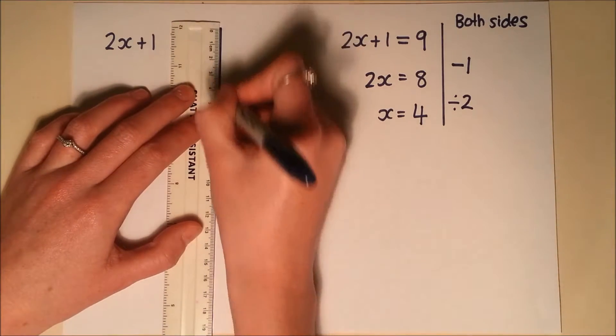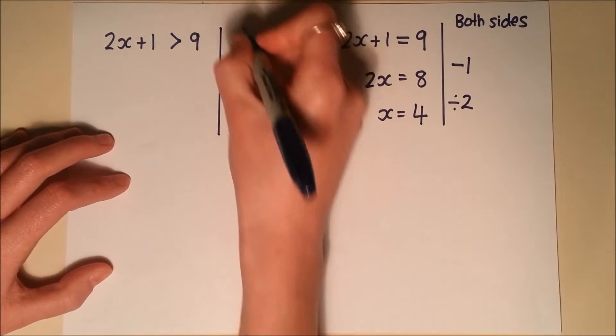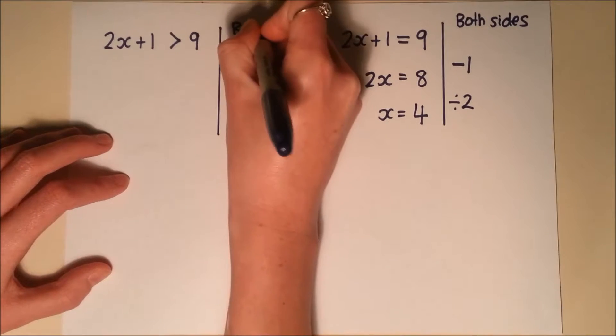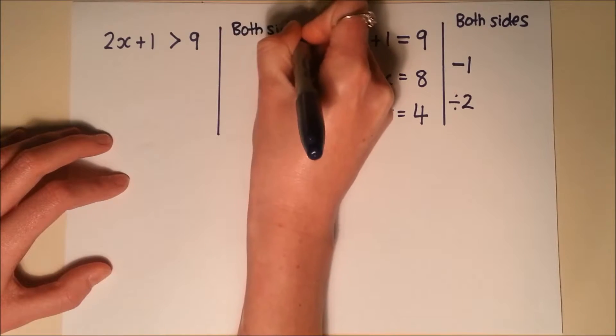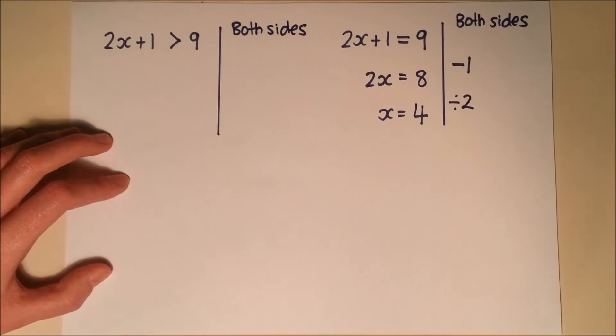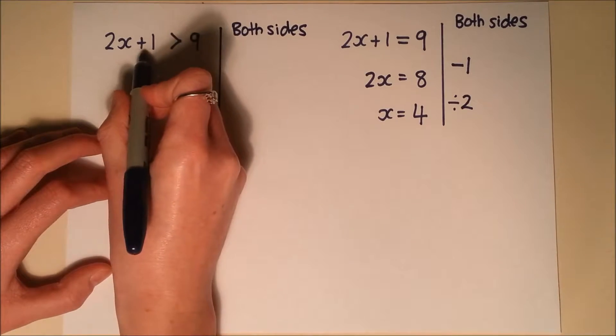Well, the inequality is solved in exactly the same way. So the only difference there is the symbol. So rather than equals, I've got a greater than sign. But the process is still identical.